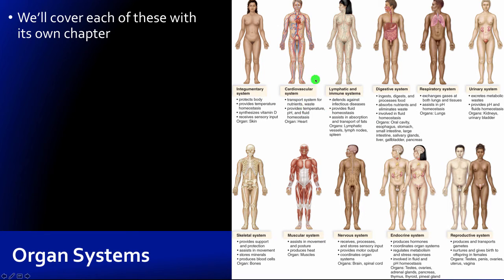Next we'll get into the cardiovascular system, which connects all our other systems together and will have many roles. These organ systems won't be tested at this point, but we will cover every single one. One interesting question is why two figures are shown for the last two systems — for the reproductive system it makes sense because males and females have different reproductive organs, and similarly the endocrine system differs between sexes, with females having ovaries and males having testes. Some systems will have large differences while others will be fundamentally the same with only small distinctions.